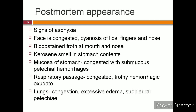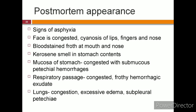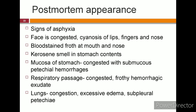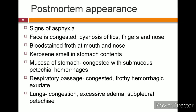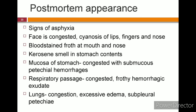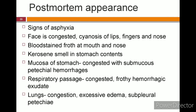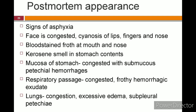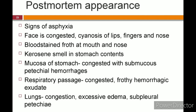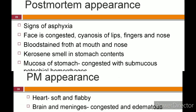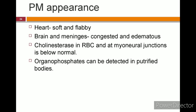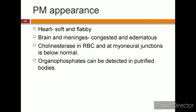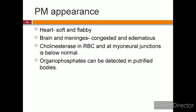Postmortem appearance in organophosphorus poisoning: there will be signs of asphyxia — congested face, cyanosis of lips, fingers, and nose, and bloodstained froth at mouth and nose. On opening the body, a kerosene smell is felt in the stomach contents. The gastric mucosa will be congested with submucosal petechial hemorrhages. The respiratory passage shows congested and frothy hemorrhagic exudate. Lungs show congestion, excessive edema, and subpleural petechiae. The heart will be soft and flabby. Brain and meninges show congestion and edema. Cholinesterase estimation in RBCs and at the myoneural junction will be below normal. Organophosphates can also be detected in putrefied bodies.